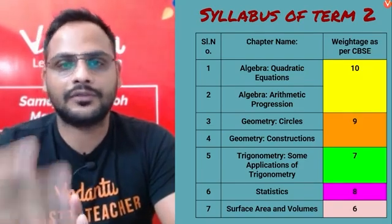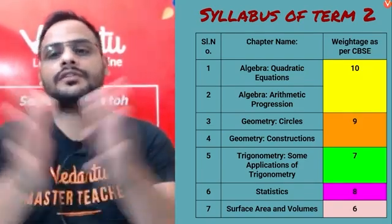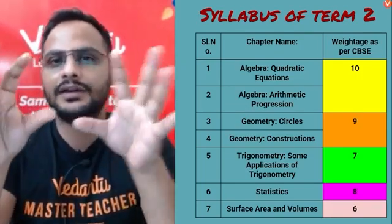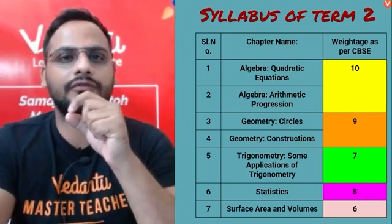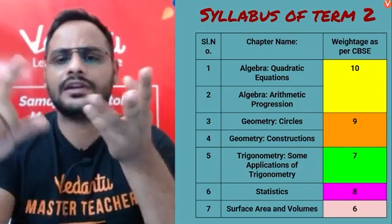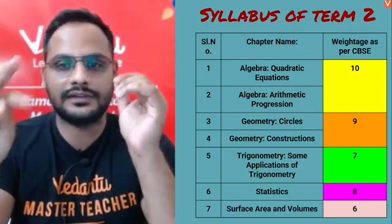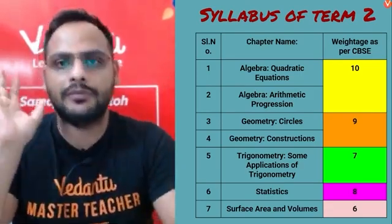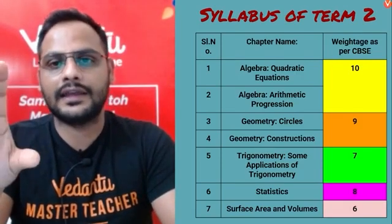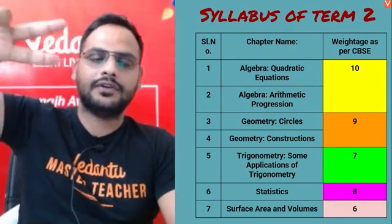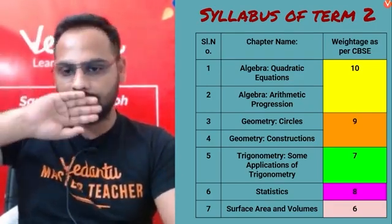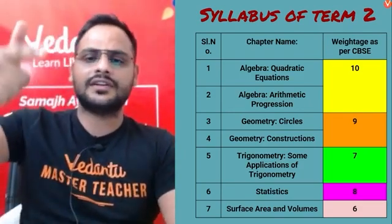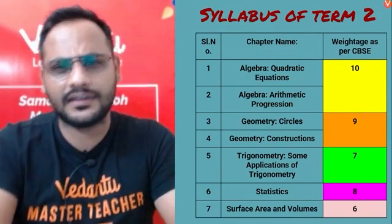Surface area and volume has various problem types. The topics where questions can get difficult are quadratic equations and arithmetic progression — the examiner might try to confuse you there. Otherwise geometry, trigonometry, statistics, and surface area and volume are easy this time. If you make algebra strong, you have very high chances of scoring full marks, because the other chapters will have direct questions.